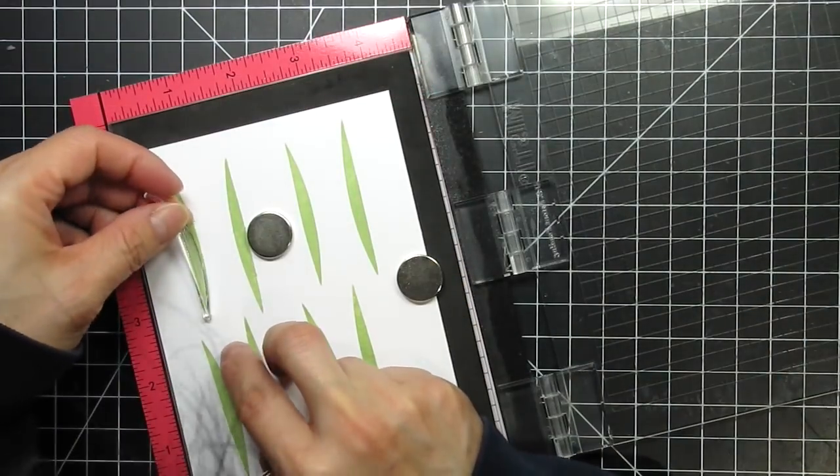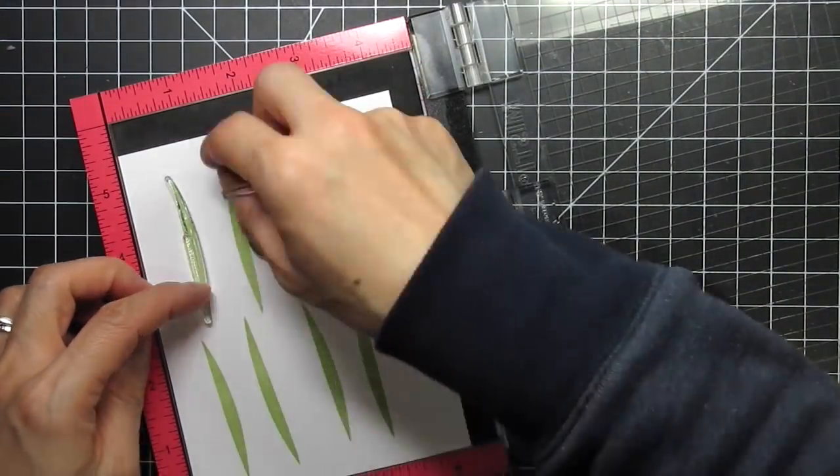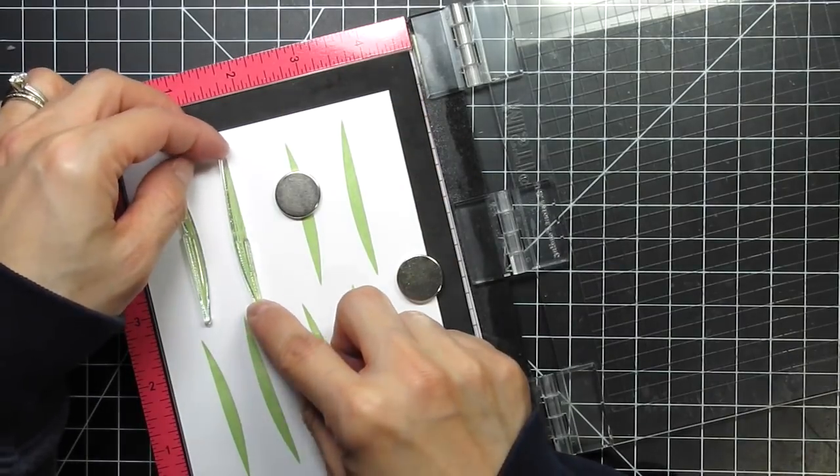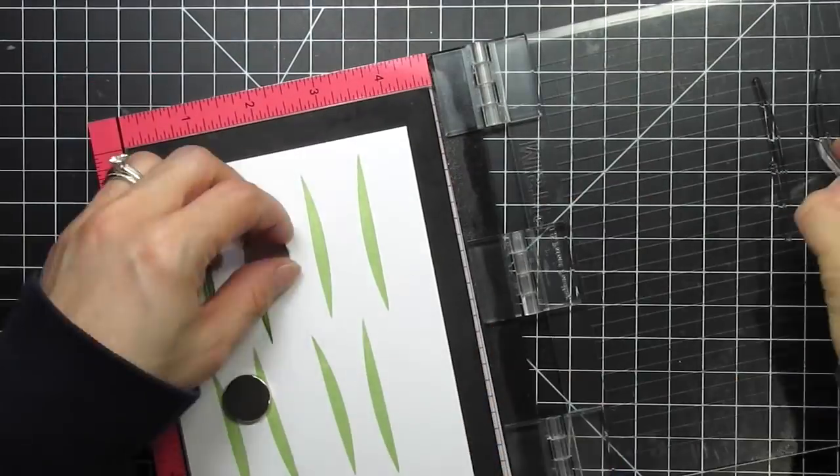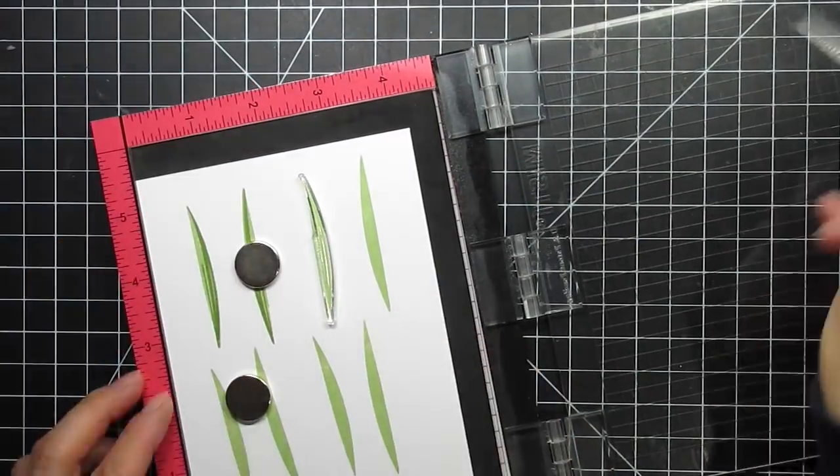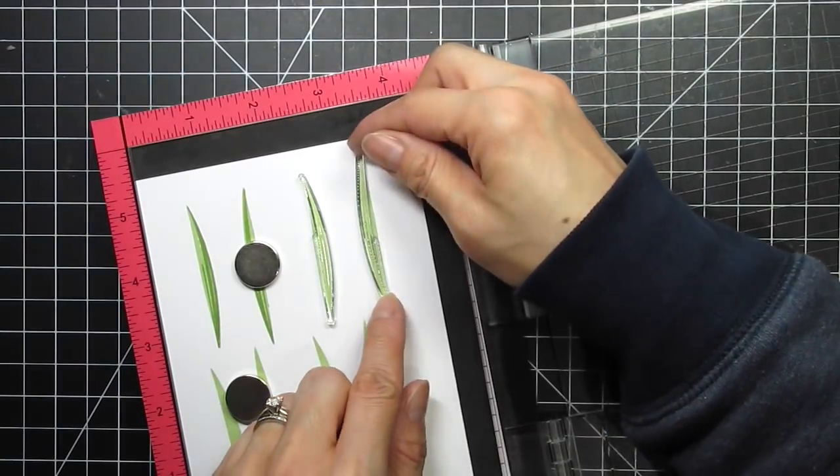Now I'm moving on to the leaves which I'll stamp in Frayed Leaf and Forest Glades. I'll stamp a whole bunch so I have more than I need. With floral arrangements, it's always hard to know how many leaves you'll need. After the leaves, I move on to the vintage jar.